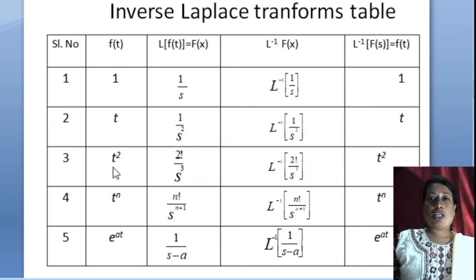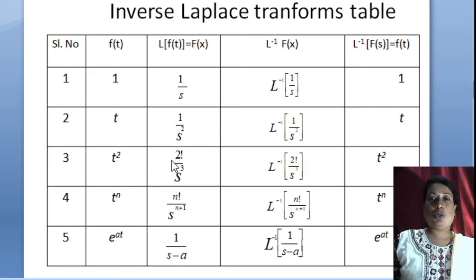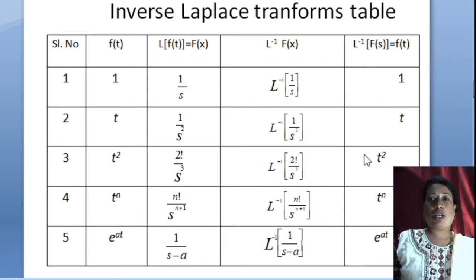Similarly, L{t²} = 2! / s³, because comparing with the formula L{tⁿ} = n! / s^(n+1), here n = 2, so 2! / s^(2+1) = 2/s³. Therefore, L⁻¹{2!/s³} = t². The general formula: L⁻¹{n!/s^(n+1)} = tⁿ.